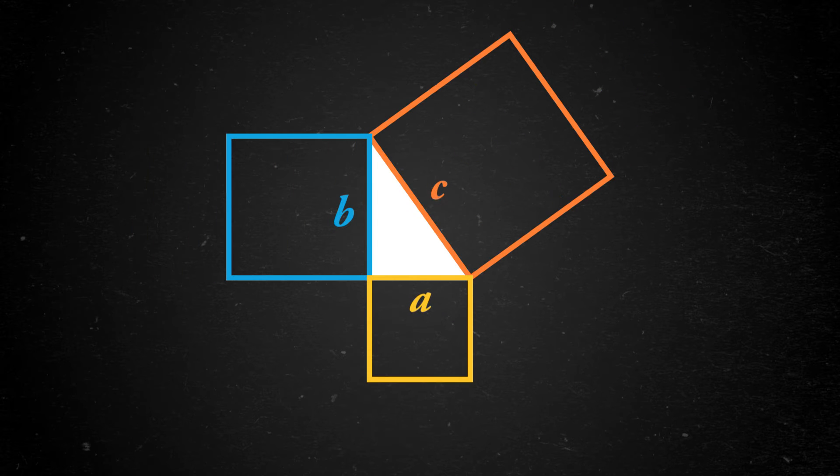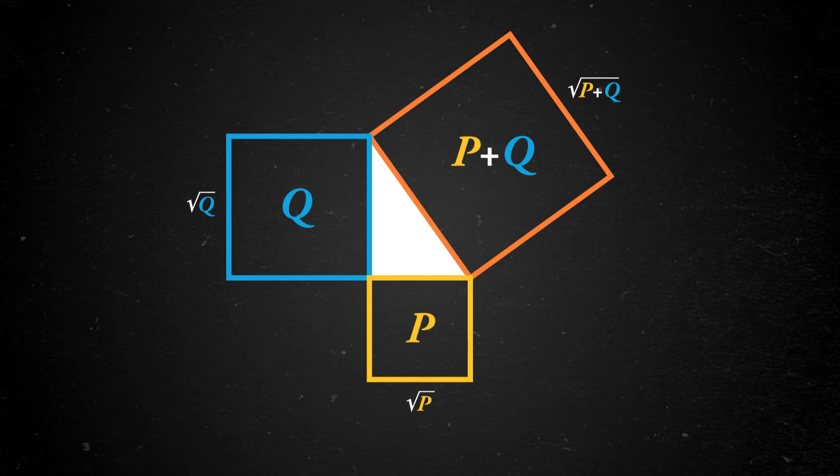Visually, we can take a right triangle and attach squares to each side. From the theorem, we know that the areas of the two smaller squares add up to the area of the large square. So if the two small squares have areas p and q, then the large square is area p plus q. The side lengths of these squares are then the square root of p, and the square root of q, and the square root of p plus q. And here, walking along the square root of p and then the square root of q is clearly a longer path than walking along the square root of p plus q.